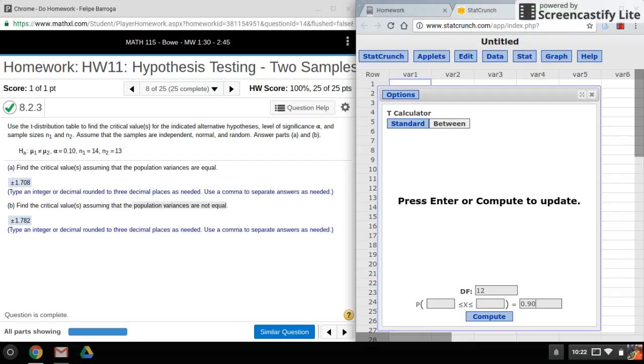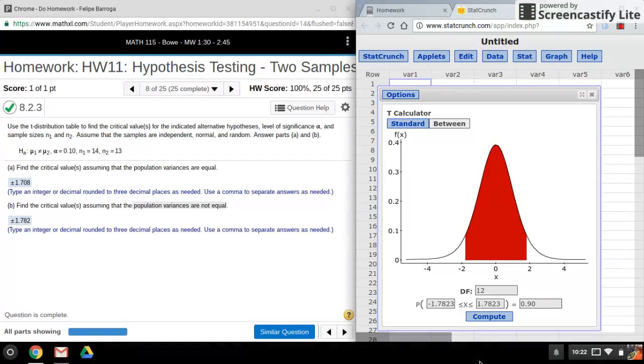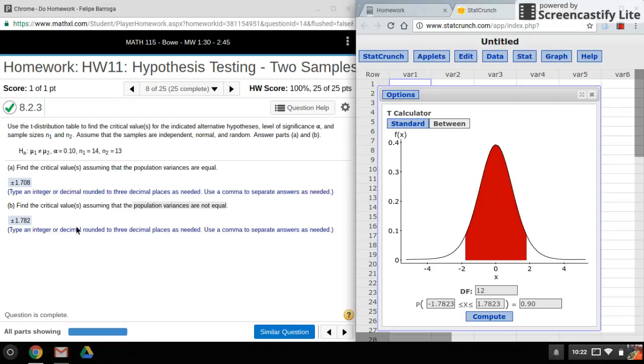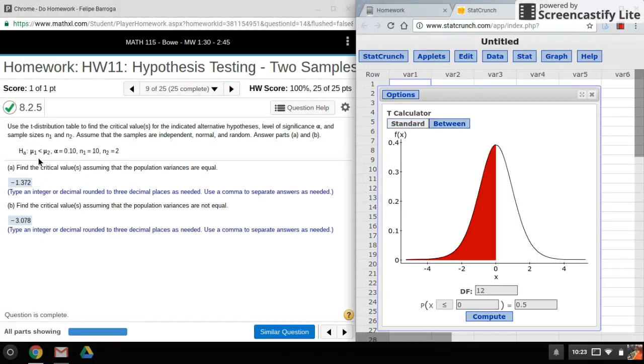There's my critical values. Now what about one-tail tests? This tells us it's a one-tail test. I want to make sure that this symbol matches.